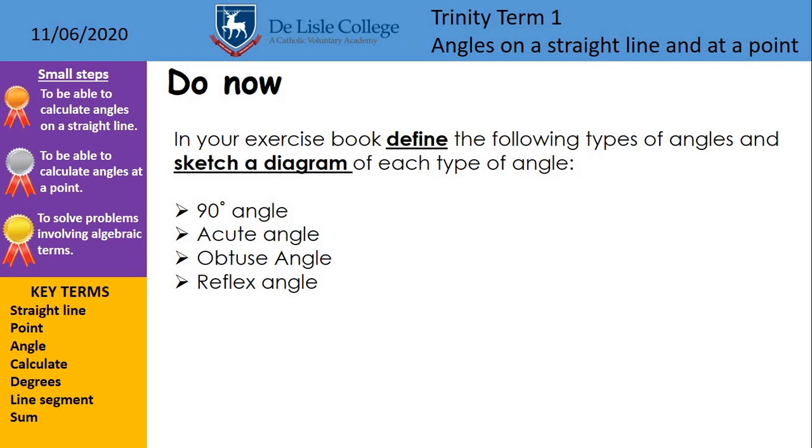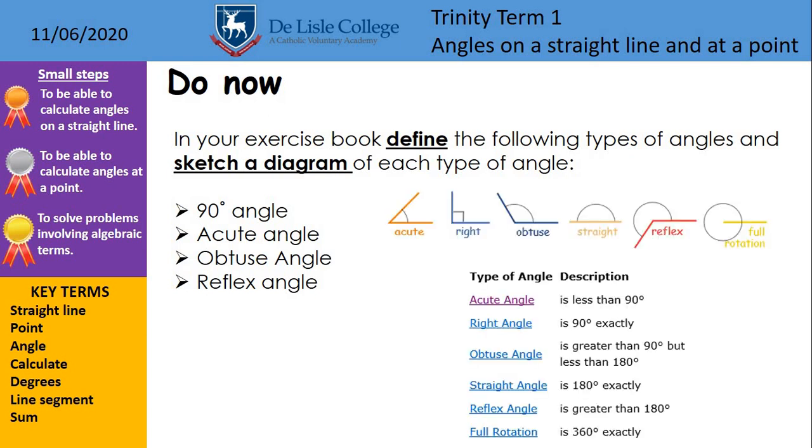Okay, so for those that have had a go now at the do now task, the answers are appearing here for you now. That's the sort of thing we're looking for, the quick sketch there, and then a description of what the appropriate angles are. I've put all of the angles there, but I'll say we're only asked for four of them.